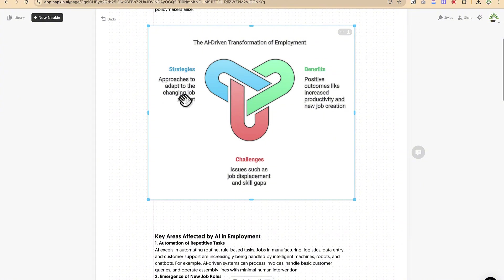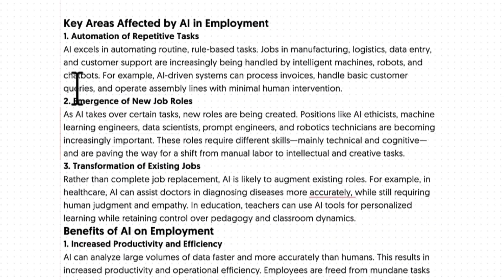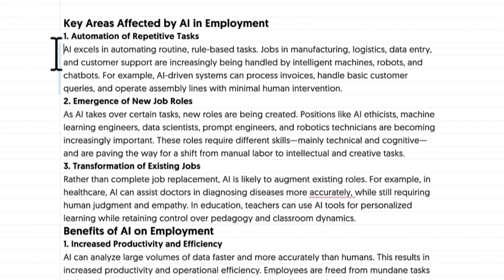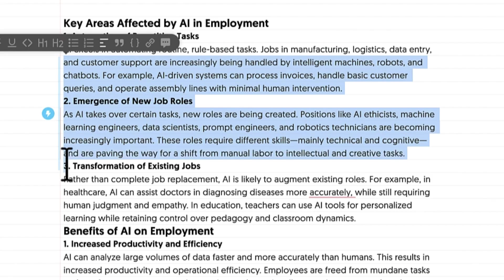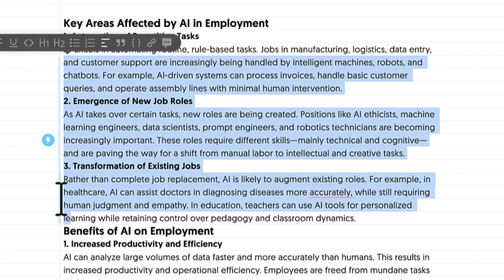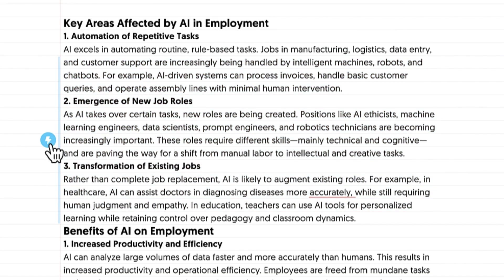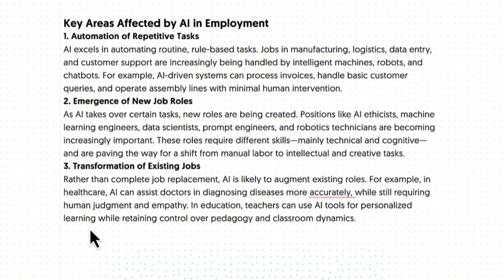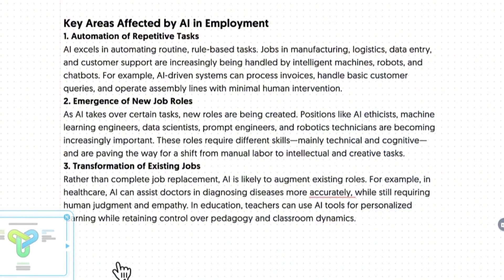Now we have selected something for the introduction — benefits, strategies, and challenges. We have this slide now. So we can go to the next one, which is going to be key areas affected by AI employment. You can come to the side over here. You can see this feature: generate visuals. You can select from this side — just select all of these — and then you click here and it's going to generate the visual for you.